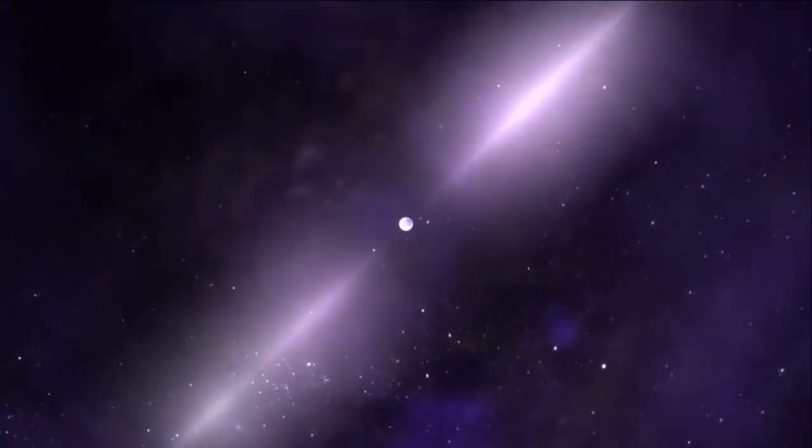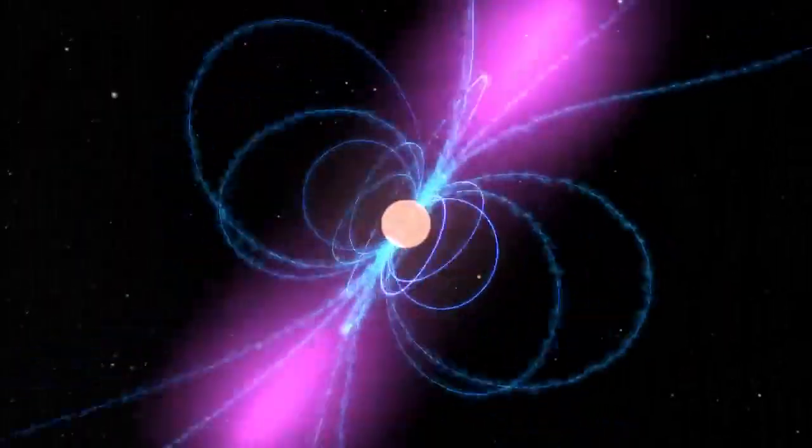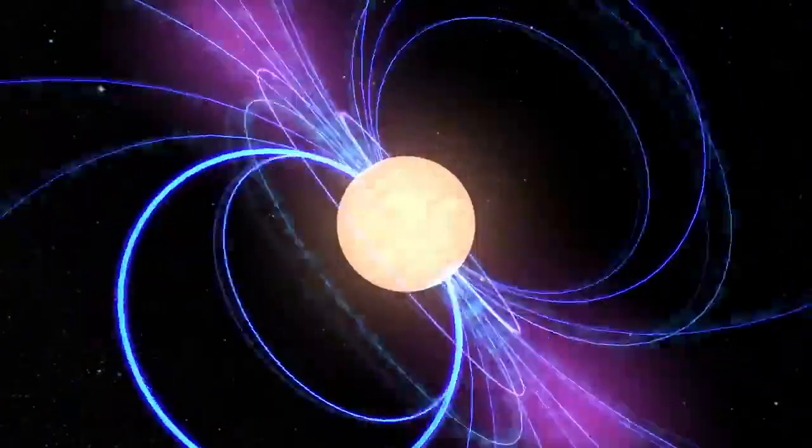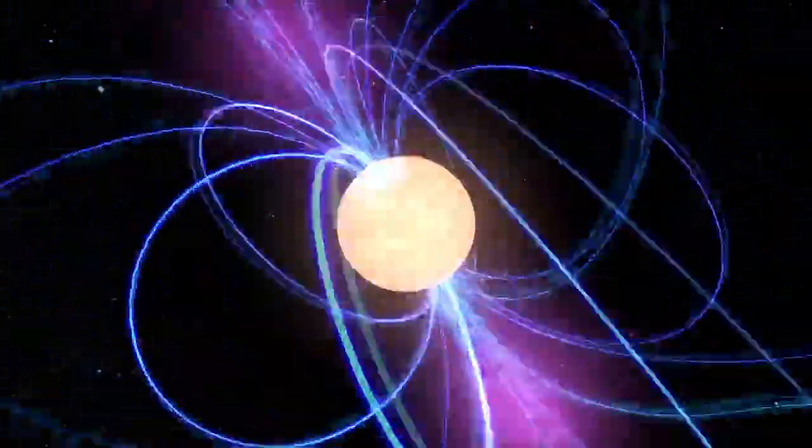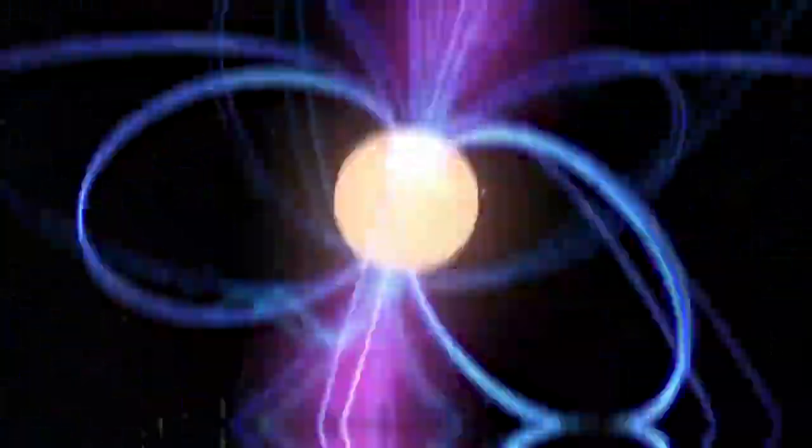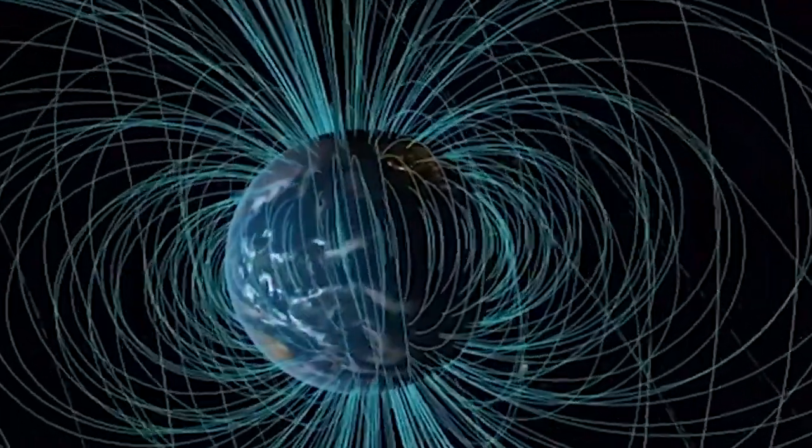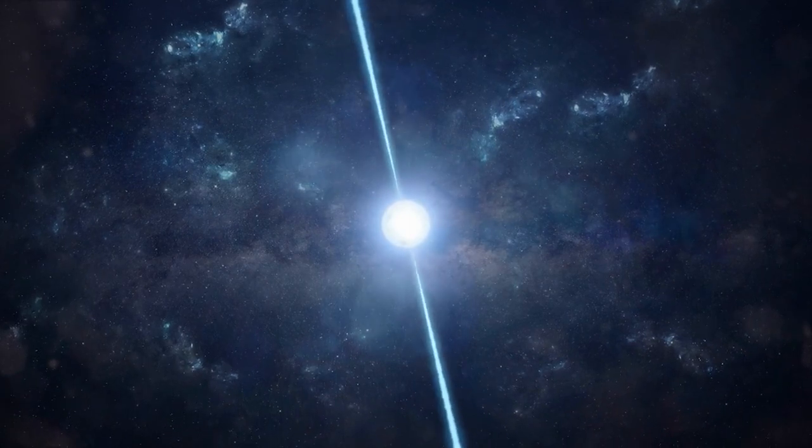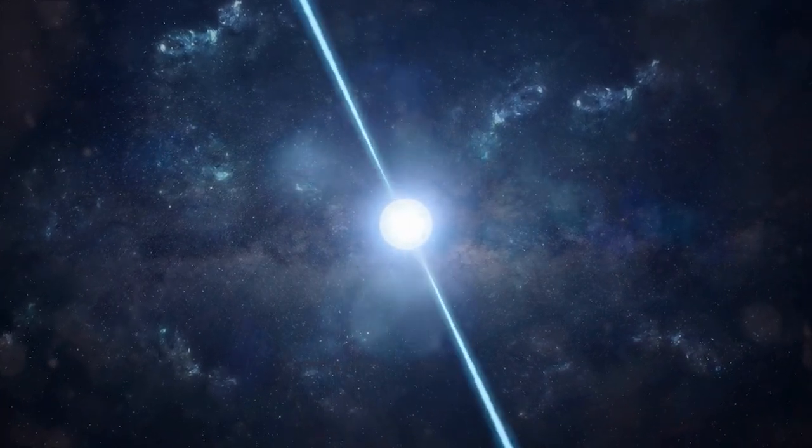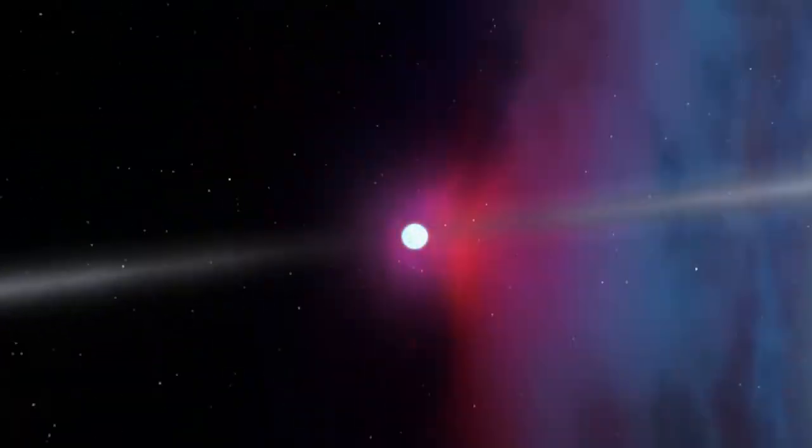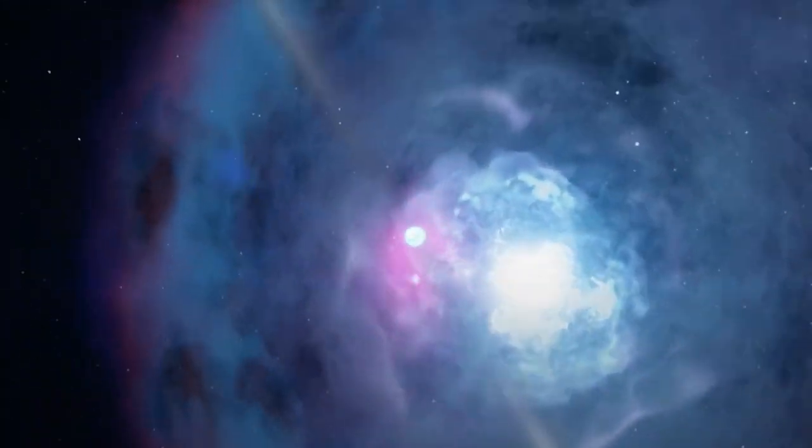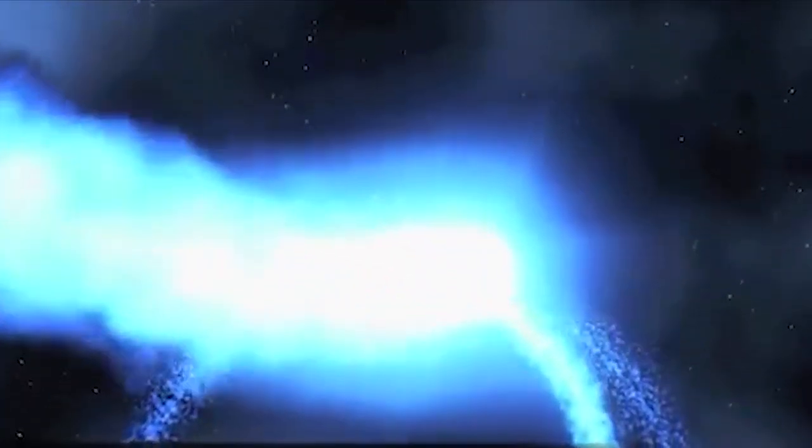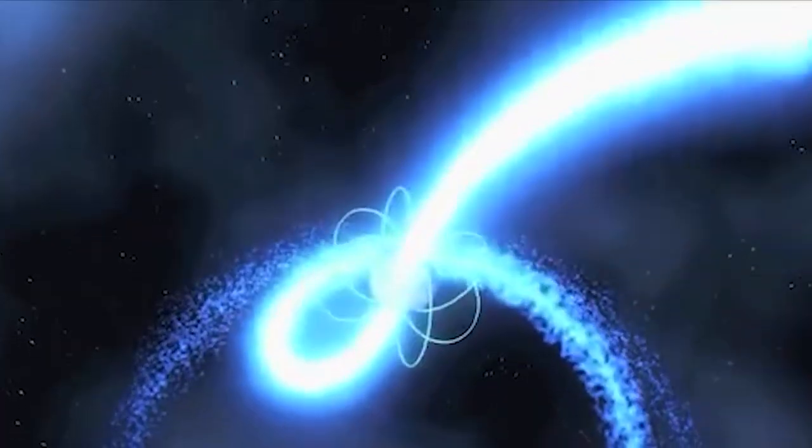Simply put, pulsars are neutron stars that release radiation beams that travel through the line of sight of Earth. This happens as a result of the magnetic fields of neutron stars, which are extremely strong, approximately a trillion times greater than Earth's own field. However, the spinning axis of the neutron star is not parallel to the magnetic field's axis. The star begins to tremble as a result, and we can measure the speed of the object's rotation by watching the pulsar's beam pass in front of our eyes at regular intervals.